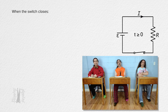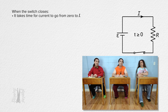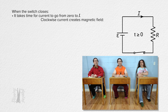When the switch closes, current flows, right? I think he is implying it takes time for the current to transition from zero to the current through the circuit, which makes sense. But why? We know current is moving charges and moving charges create magnetic fields, right?